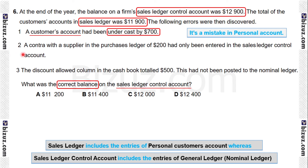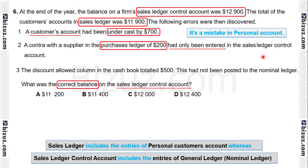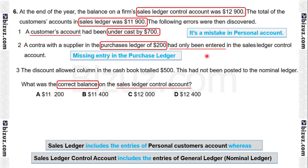Error number two: a contra with a supplier in the purchase ledger of 200 had only been entered in the sales ledger control account. So the contra had been entered in the sales ledger control account — that means there is no error in the sales ledger control account. This is a missing entry in the purchase ledger, so we should ignore this as well.